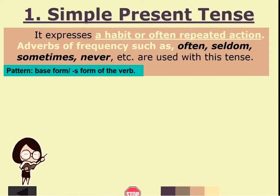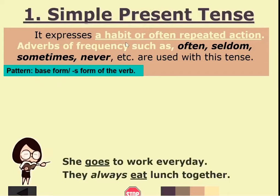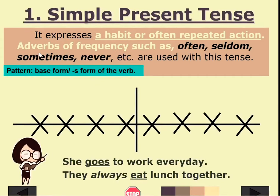First is the simple present tense. It expresses a habit or often-repeated actions. Adverbs of frequency such as 'often,' 'seldom,' 'sometimes,' 'never,' and others are used with this tense. For example: 'She goes to work every day' — this is simple present because it expresses a habit, something she regularly does. 'They always eat lunch together' — this also indicates a habitual action.